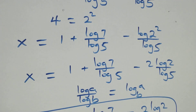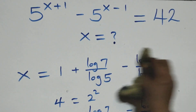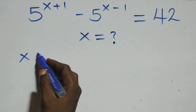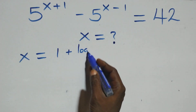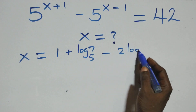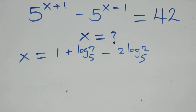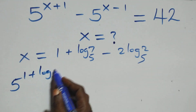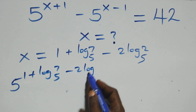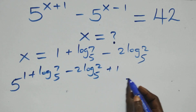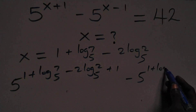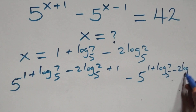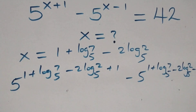Let's check here if this satisfies the given problem. We substitute the value of x, which is x equals to 1 plus log 7 base 5 minus 2 log 2 base 5. What we have becomes 5 raised to power 1 plus log 7 base 5 minus 2 log 2 base 5 plus 1, also minus 5 raised to power 1 plus log 7 base 5 minus 2 log 2 base 5 minus 1.